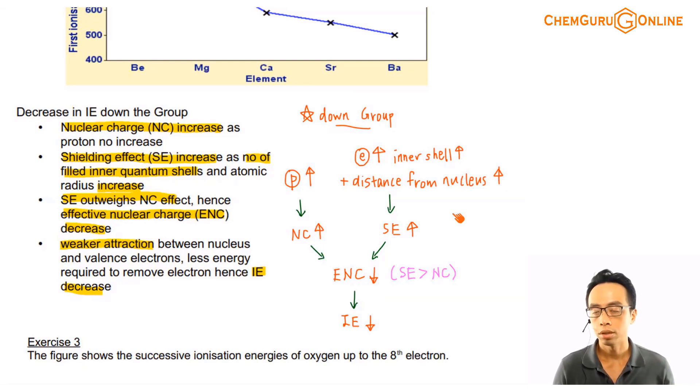Concept is again falling back on effective nuclear charge. Proton number increase, nuclear charge increase, which is here. That's reasonable, no problem. But if there's an increase in the nuclear charge, there should be a stronger attraction on the valence electron, so the IE will go up.